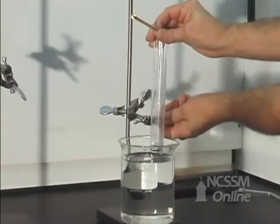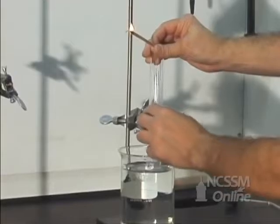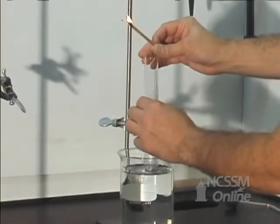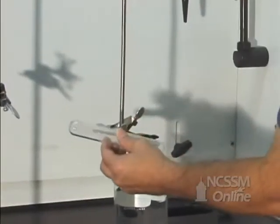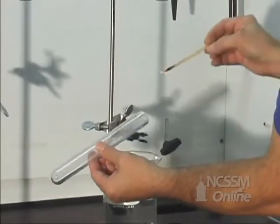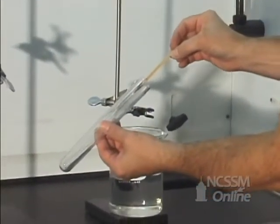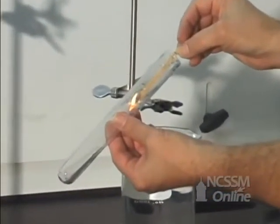We can demonstrate that the gas collected is oxygen by testing the gas with a glowing splint. As a glowing splint is brought into the test tube, the combustion accelerates in the oxygen and the splint reignites.